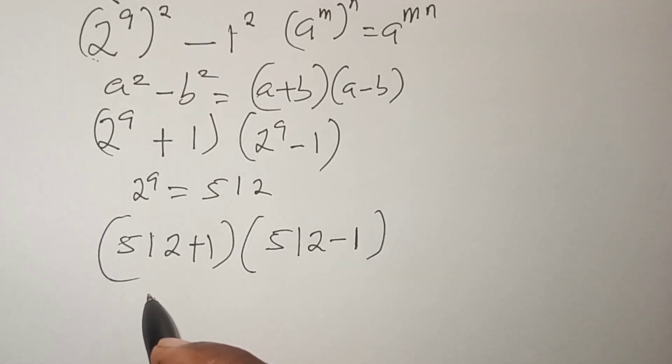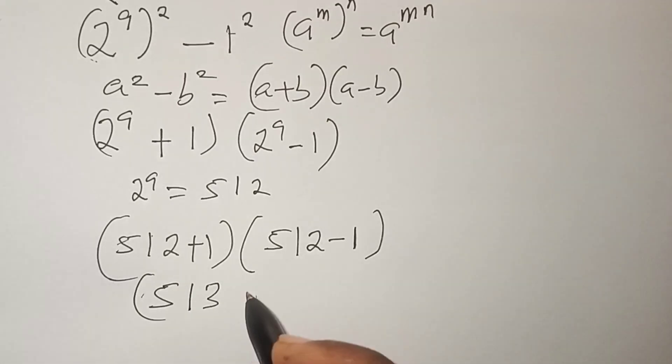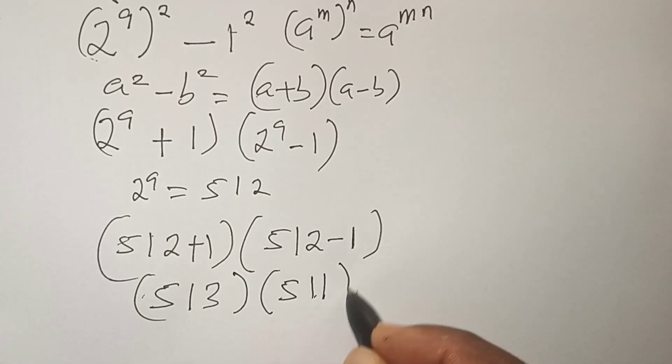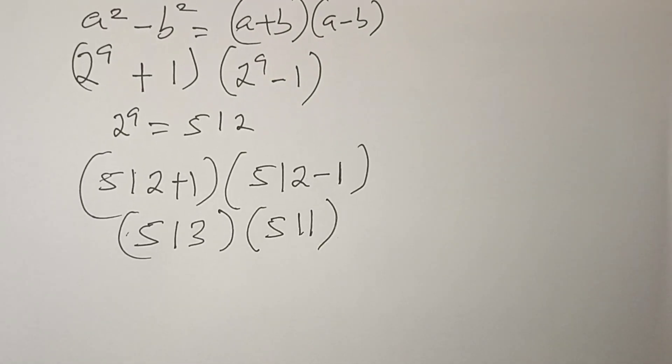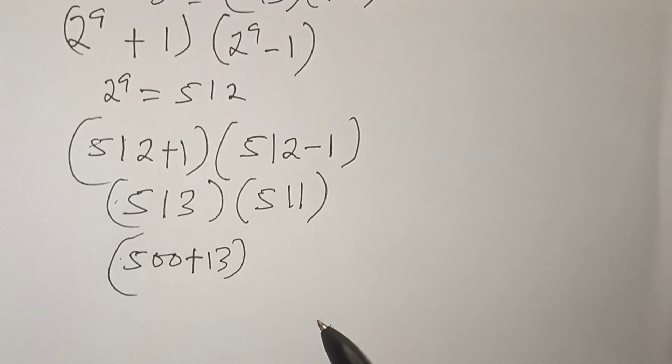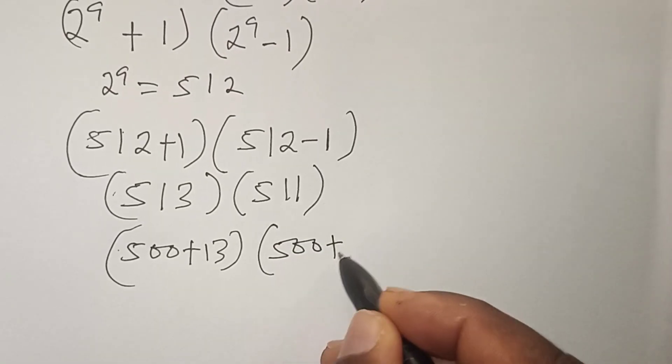This gives us 513 times 511. We can split this as 500 plus 13 times 500 plus 11.